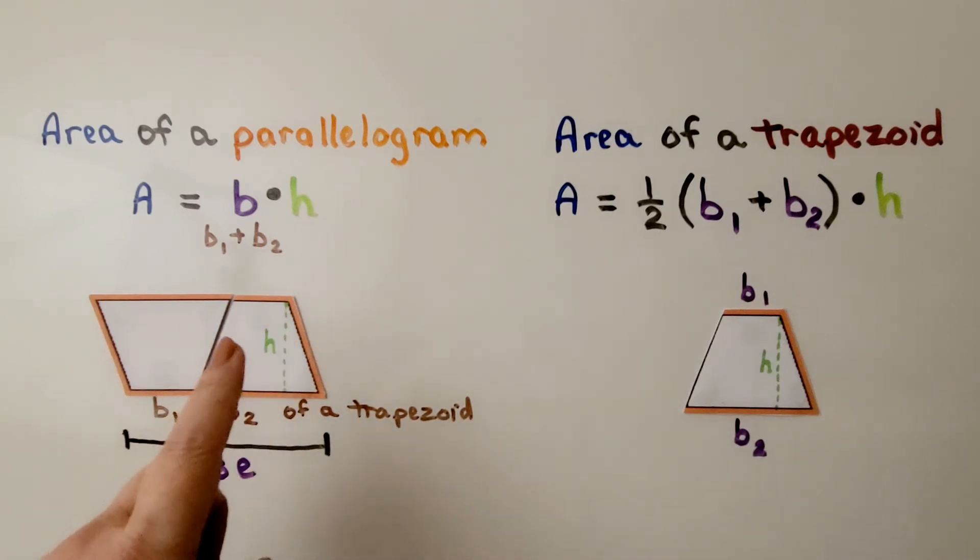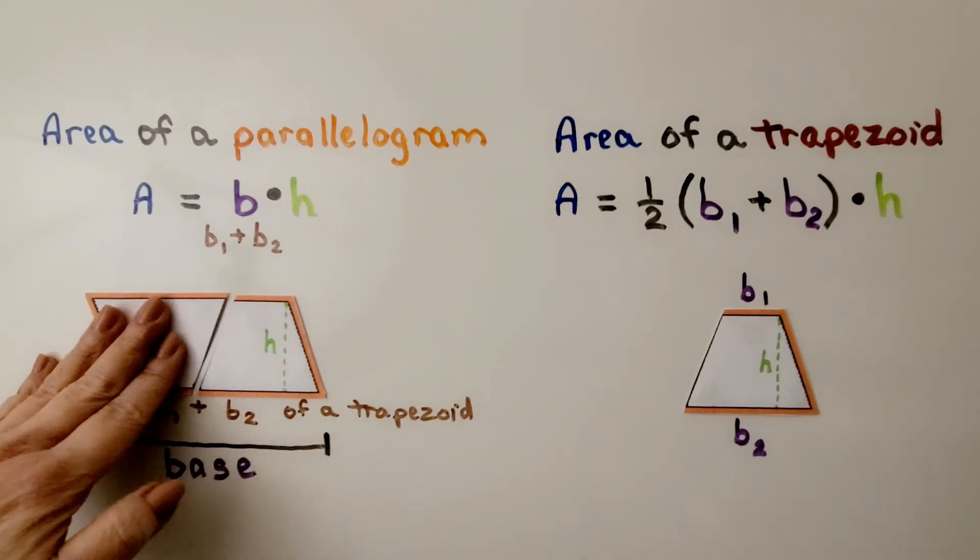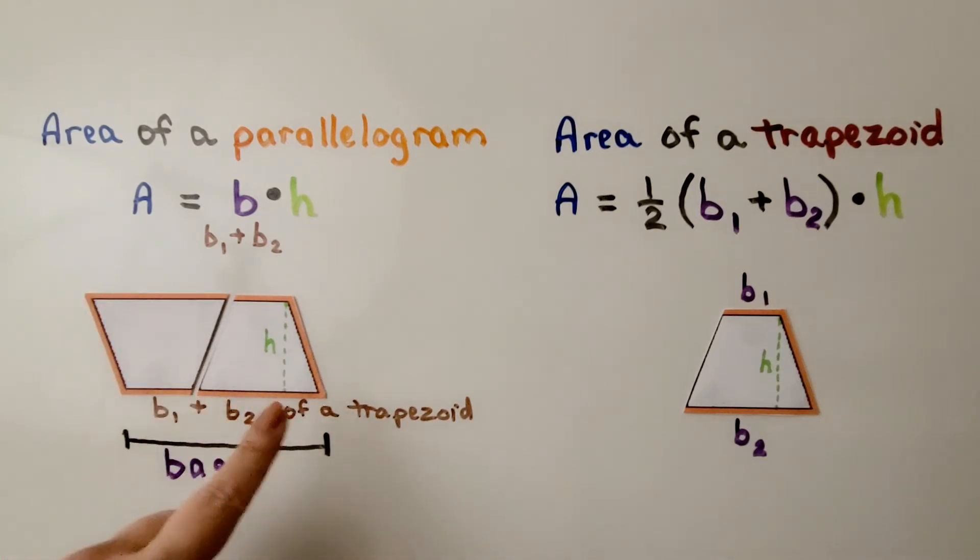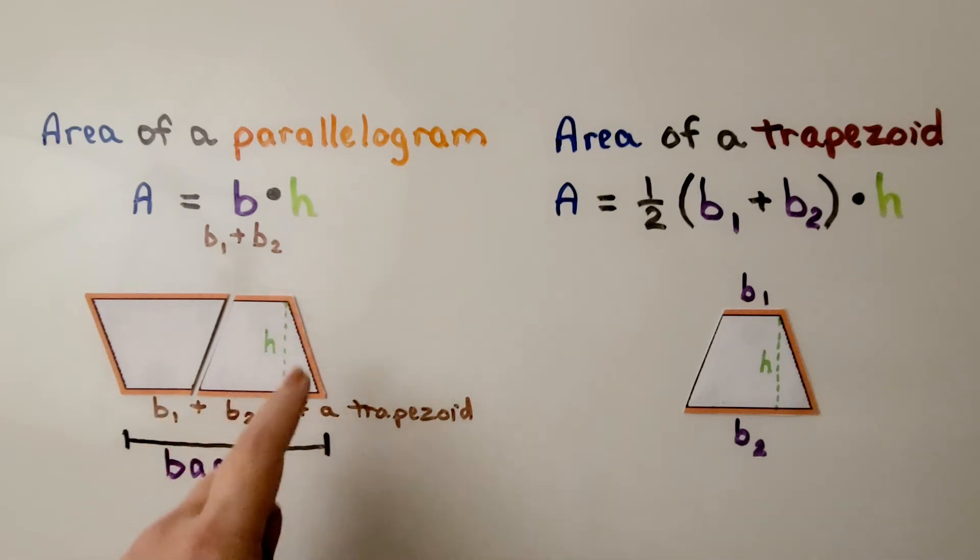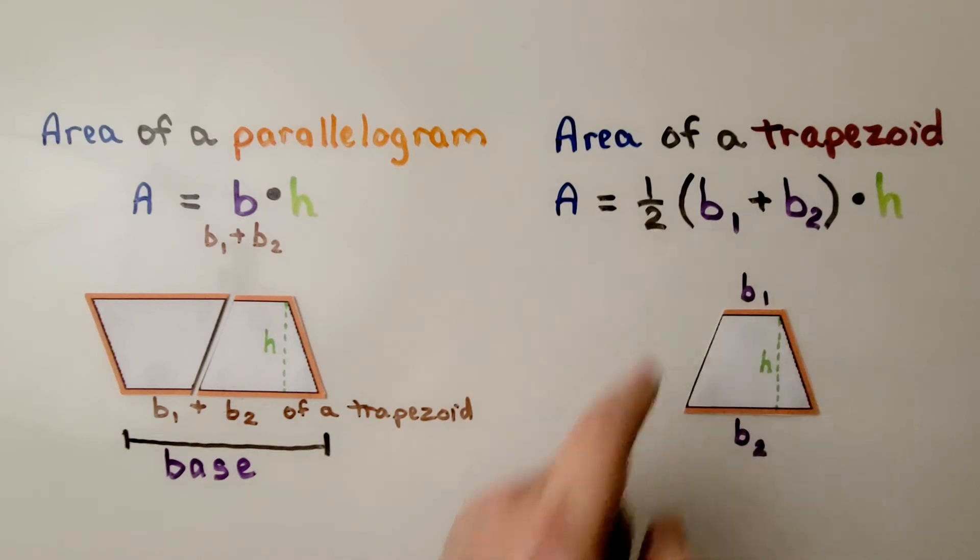Since a parallelogram can be split in half to give us two trapezoids, that means this is only half the parallelogram. So we're going to use this base and this height, but we're going to multiply it by half.